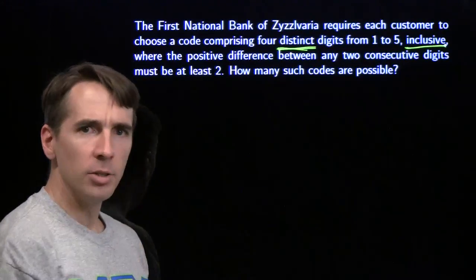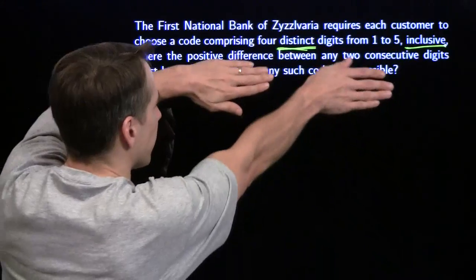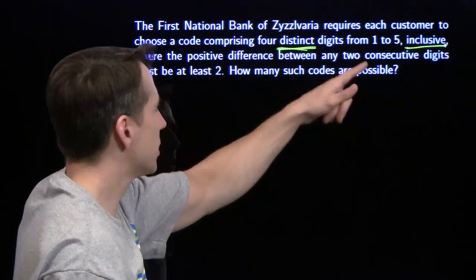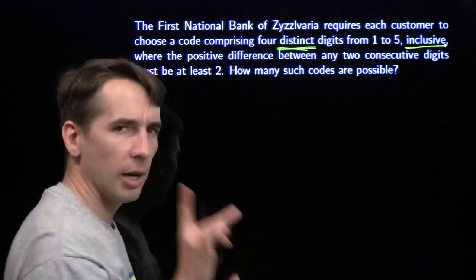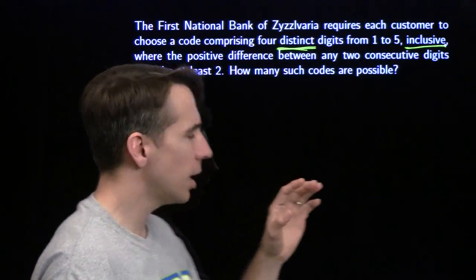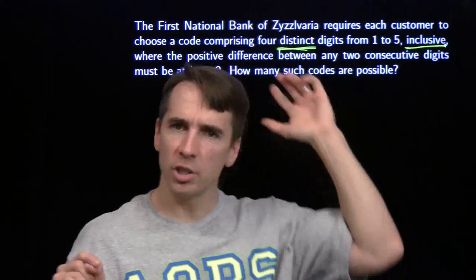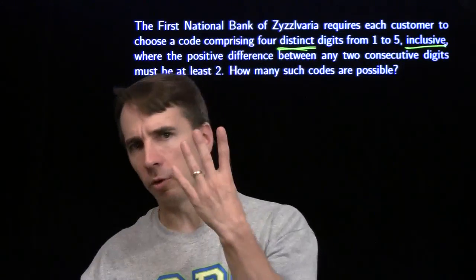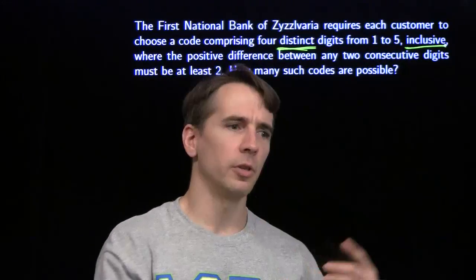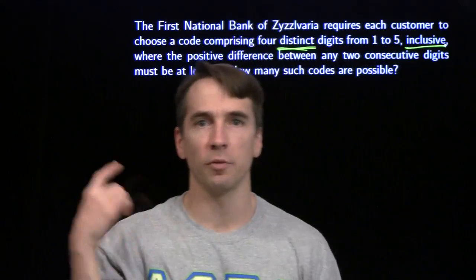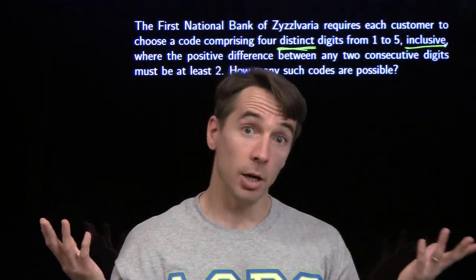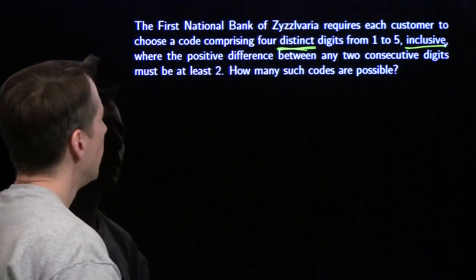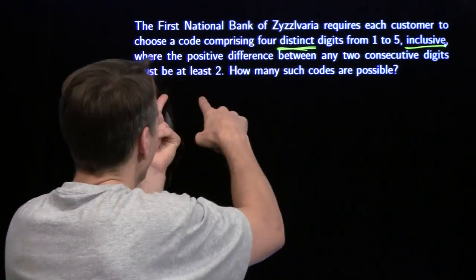When I start to get used to the problem, I'm going to forget about the consecutive-difference restriction for just a minute and focus on the simpler one: four distinct digits from one to five. If we just had that restriction, you'd have five choices for the first digit, four for the second, three for the next, two for the last — five times four times three times two. That's 120 codes. This other restriction is pretty tight.